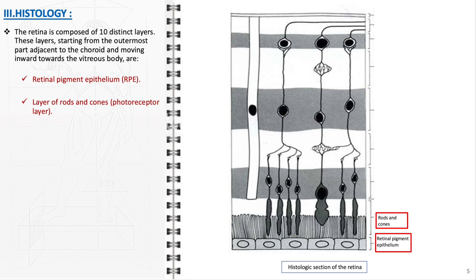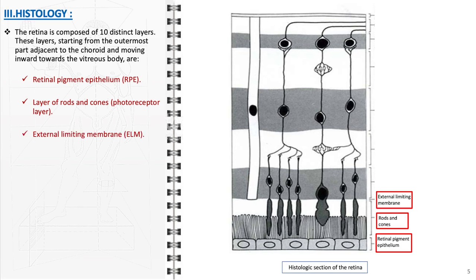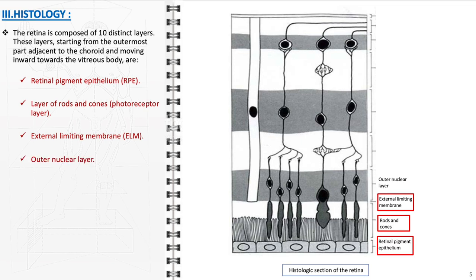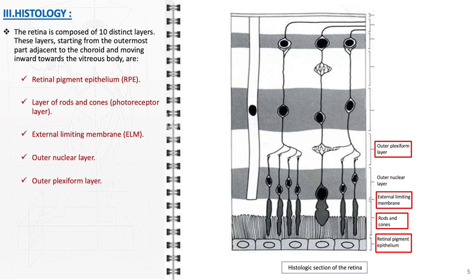2. Layer of rods and cones, photoreceptor layer containing the cells responsible for light detection. 3. The external limiting membrane (ELM), a barrier separating the photoreceptors from the other neuronal cells. 4. Outer nuclear layer, housing the cell bodies of the rods and cones. 5. Outer plexiform layer, where synapses between photoreceptors and bipolar cells occur.